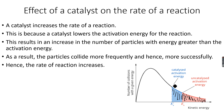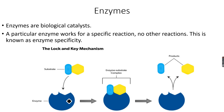This is explained very clearly through the Boltzmann distribution curve. So we have covered the effect of all the factors on the rate of a reaction. Now let's talk a little about enzymes.